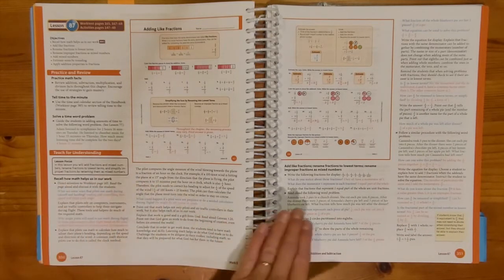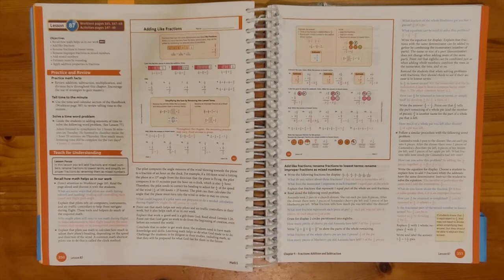Anything in the black font is going to be information that I would be reading to myself to help give me a better idea of how to present this information to my child so that they can understand it to the best of their ability. Anything in blue, I would be saying directly to my child or asking them. And anything in the red font is what they would be telling me as a response to those questions in blue.